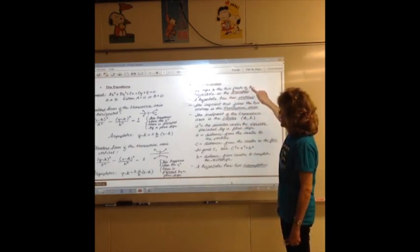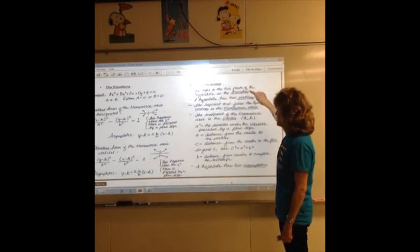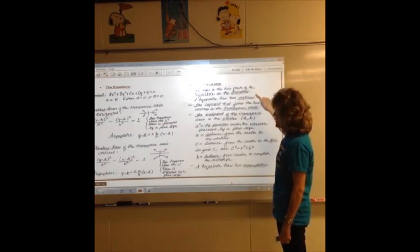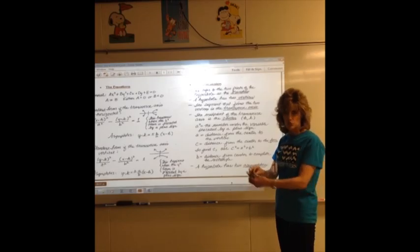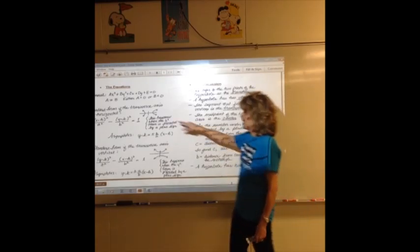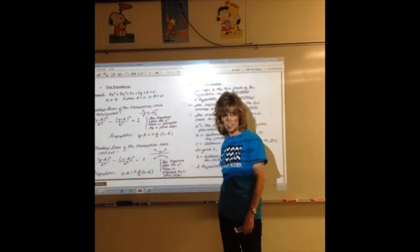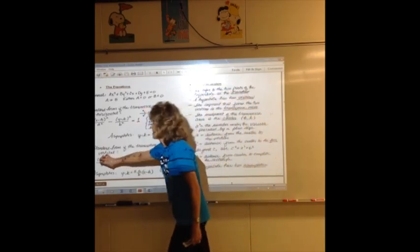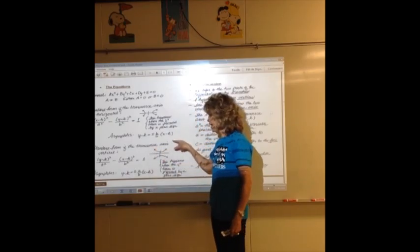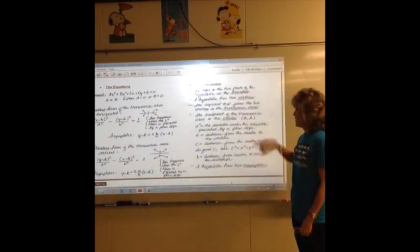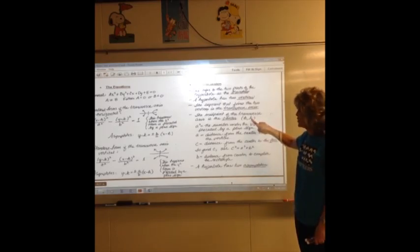The two parts of the hyperbolas are branches. There are two official vertices. Instead of a major axis and a minor axis, we have a transverse axis. In this case, the transverse axis is the X axis because the branches open in the X direction. If the Y squared comes first, the branches are going to open in the Y direction. We're going to still have a center, H K. It's the midpoint of the transverse axis.